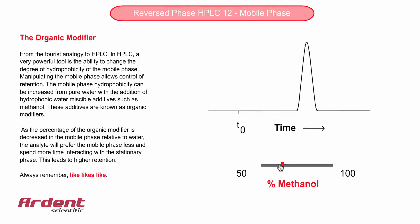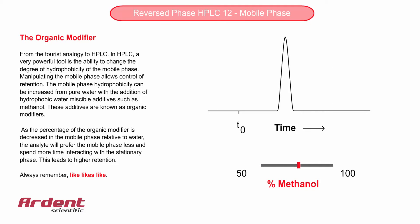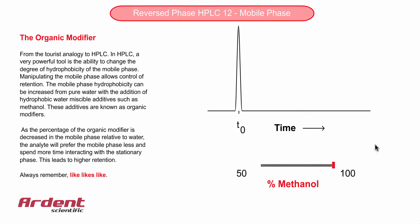As the slider bar is moved to change the percentage of methanol in the mobile phase, you will observe the change in retention of the substance. This change in retention occurs because of the like-likes-like principle. As the amount of methanol increases, the hydrophobic substance will prefer the mobile phase and spend less time interacting with the stationary phase, and hence will lead to lower retention.